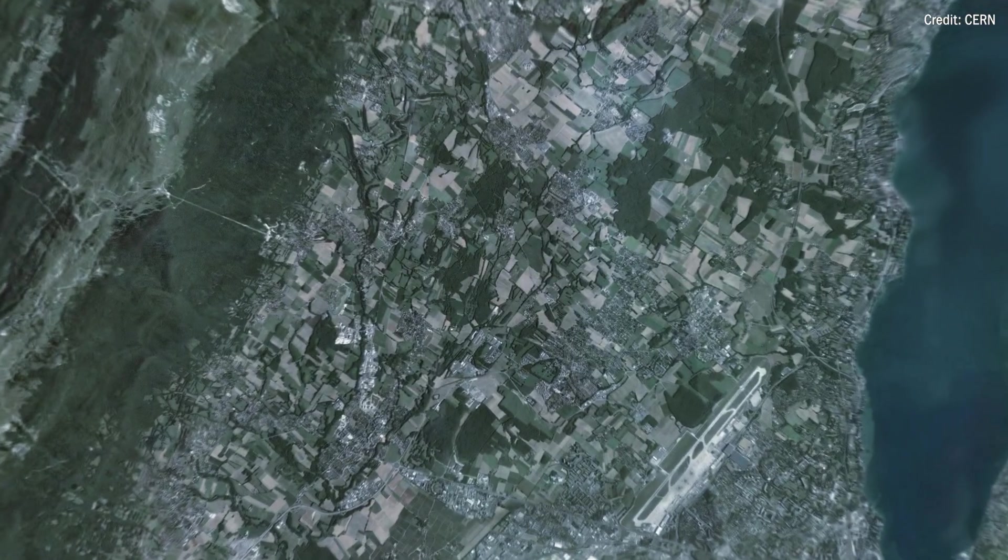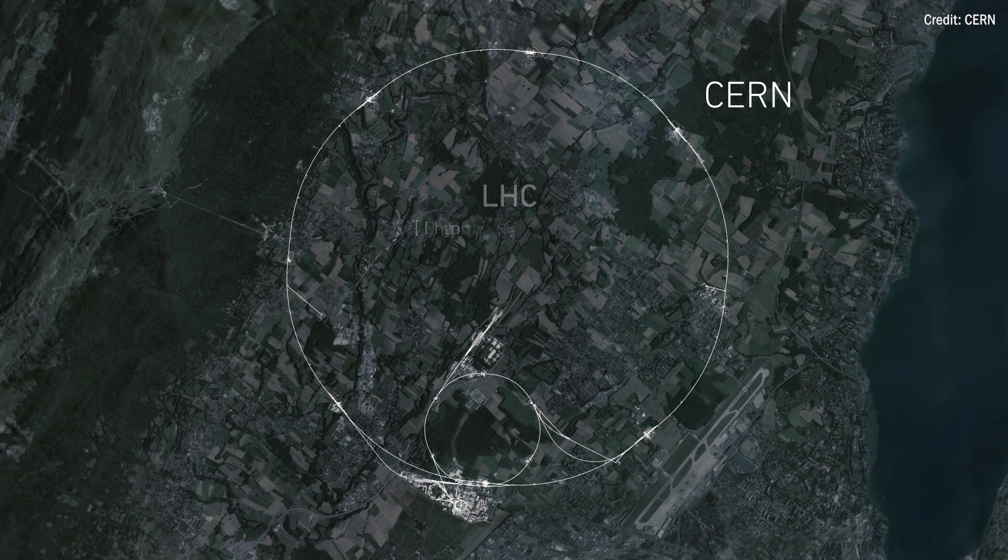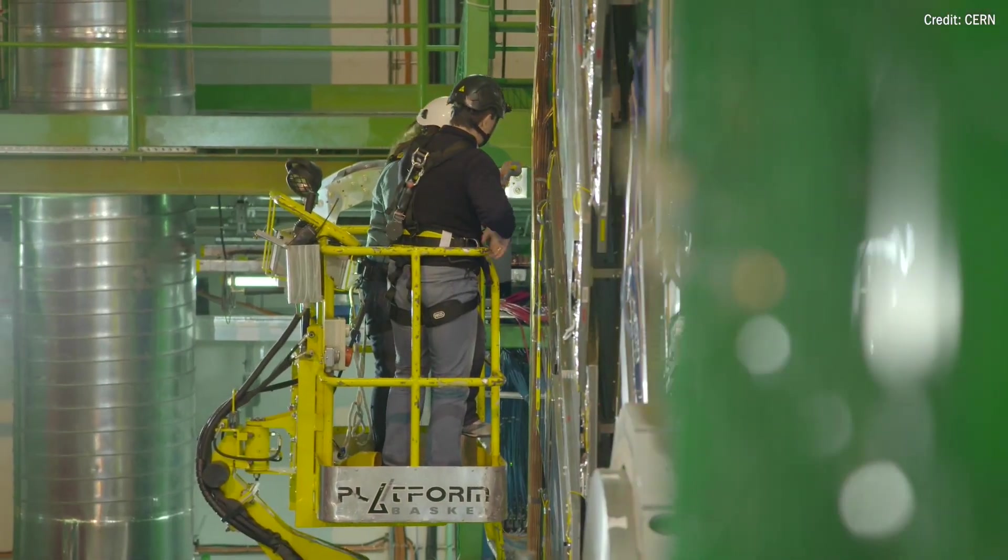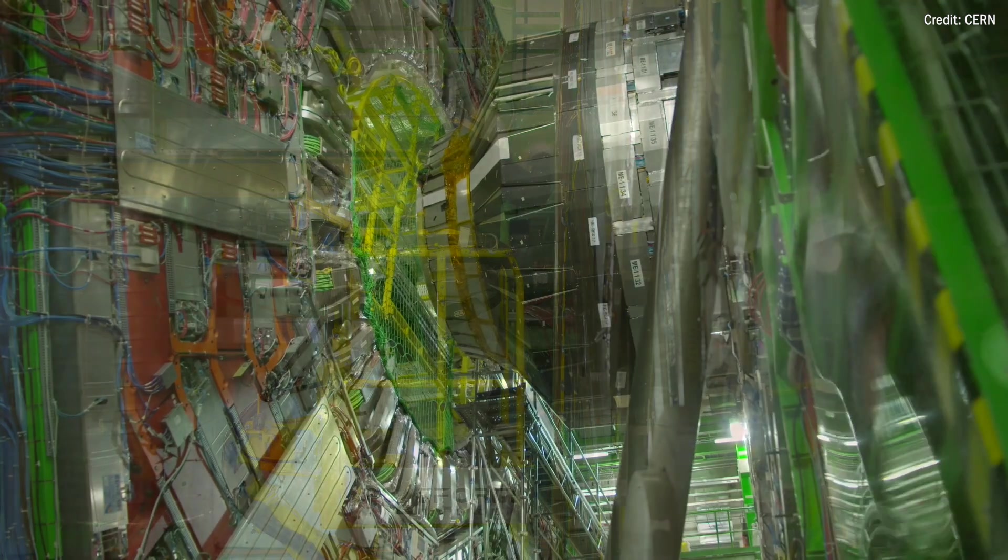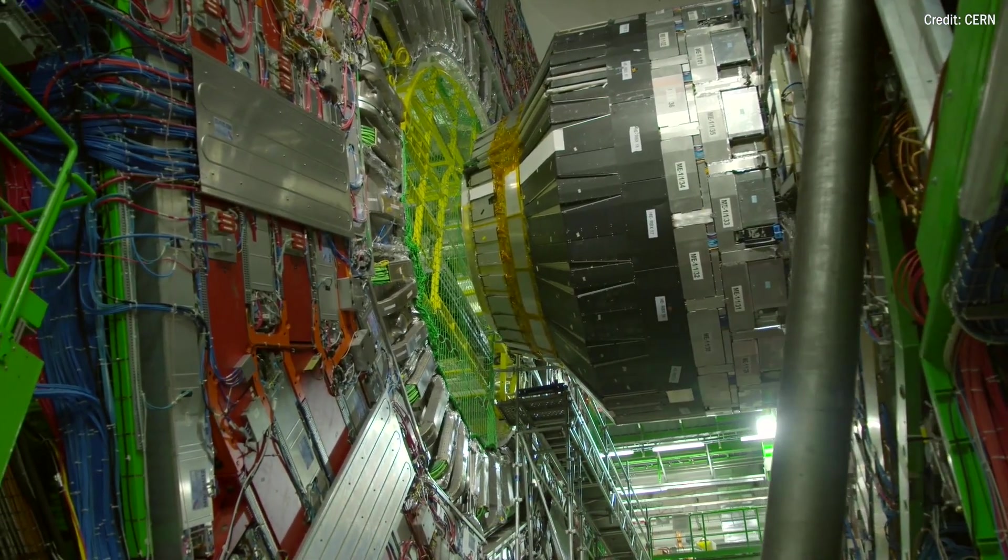CMS is the Compact Muon Solenoid. It's an experiment located on the Large Hadron Collider Ring at CERN. The Compact Muon Solenoid itself specializes in taking data from both heavy ion and proton-proton collisions, and we are trying to both study the standard model of particle physics, as well as looking for new particles from beyond the standard model.